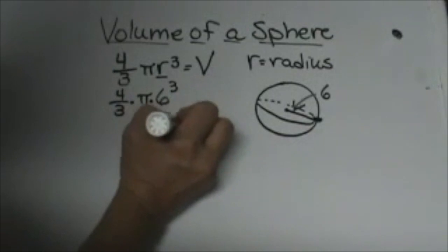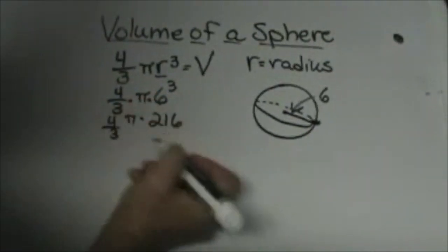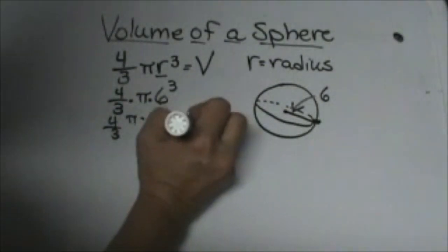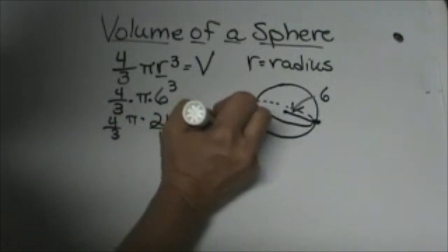6 cubed is 216, so let's bring that down. Then we're going to multiply by 4 and then divide by 3 because 3 is on the bottom, and that gives me 288 pi.